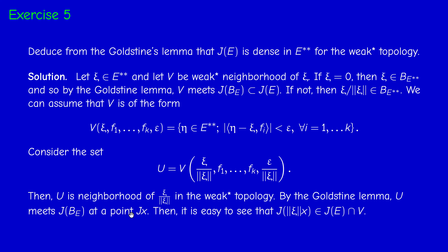According to the Goldstein Lemma, this neighborhood meets J of E at some point Jx. Since Jx is in U, we have |Fi(Jx) - psi/||psi||) | < epsilon/||psi||. Multiplying by ||psi||, we get that J of (||psi|| · x) is actually in V. And it's in J of E because x is in E, so any multiple of x is in E. Therefore, psi is in the closure of J of E with respect to the weak-star topology.